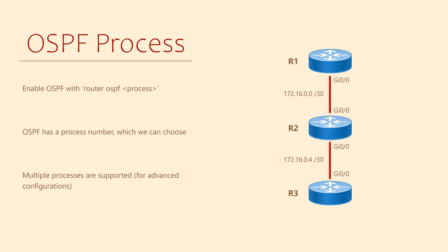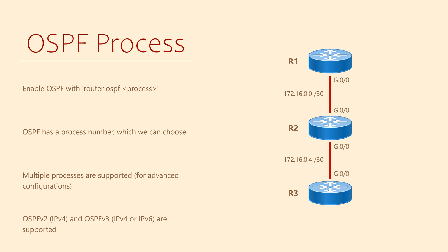There are two versions of OSPF we can use: version 2 and version 3. Version 2 is still the most common, but it only supports IPv4. If you want to use IPv6, which we'll cover later in a different video, you need OSPF v3.